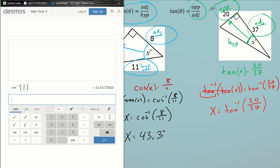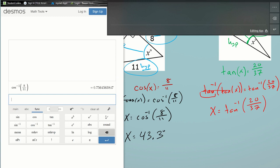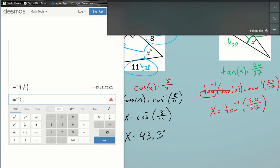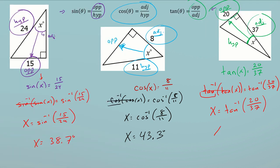On the right side I put tan inverse of 20 over 37. On my Desmos scientific calculator I go to functions — making sure I'm in degrees, not radians, since the answer changes if I switch — and type in tan inverse of 20 divided by 37, hit enter. We get an angle measurement of 28.4 degrees, so x equals 28.4 degrees.